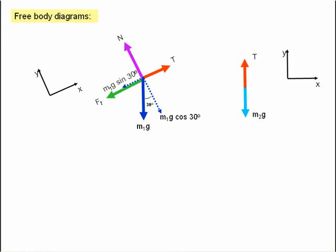The free body diagram for the other mass, M2, is now shown on the screen. Here we've got M2g, the weight acting downwards, and T, the tension in the rope again acting upwards. For this free body diagram, I'm going to use a coordinate system whereby the x-axis is horizontal and the y-axis is vertical.